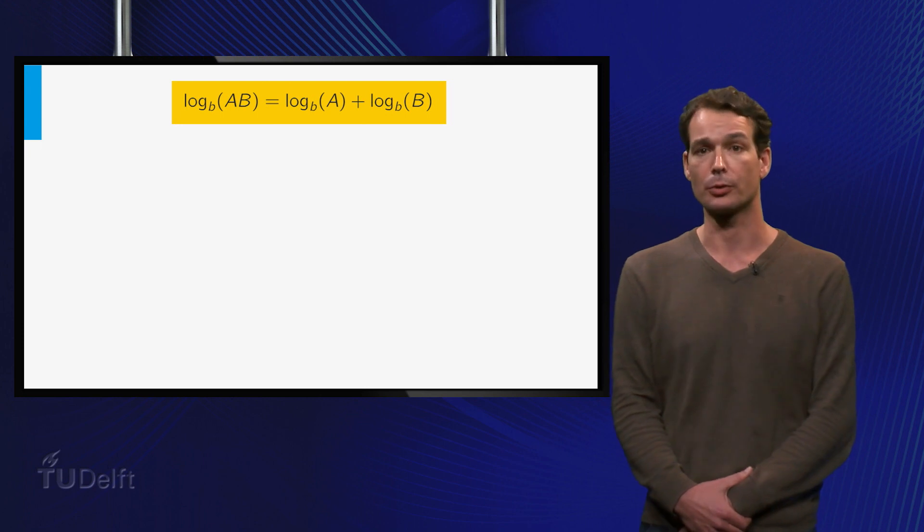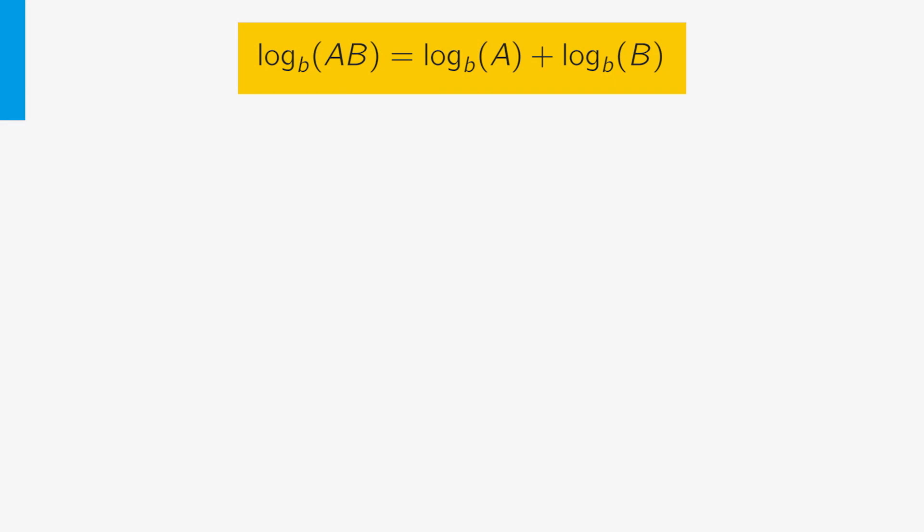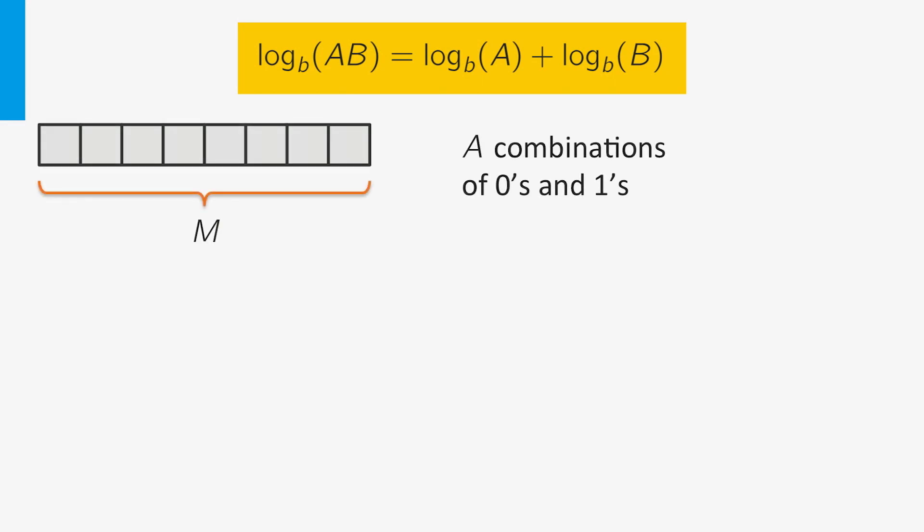Let's start with this rule. The logarithm of a product is the sum of logarithms. Suppose we can make A combinations of bits, that is, of zeros and ones, by putting them in these M boxes. In the previous video you have seen that this means that M is equal to the log of A.